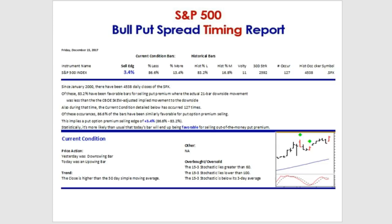If you're going to do a bull put spread in the S&P 30 days out, a standard deviation away, 83.2% of the time the market will not go down and touch that short strike. The other 16.8% of the time, it will touch that short strike. Out of our 127 times that our current market condition has occurred, 86.6% were similarly favorable — higher than the 83.2%, so we have a little bit of an edge of 3.4% for selling bull put spreads 30 days out, a standard deviation away.